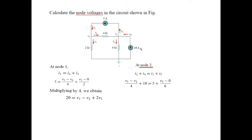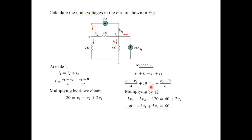At node 2, I4 and I2 are entering, and I1 and I5 are leaving. So I2 plus I4 equals I1 plus I5. I2 is (V1 minus V2) divided by 4. I4 is 10 amperes, I1 is 5 amperes. I5 is going from V2 to 0 so V2 divided by 6. The LCM here is 12, so we multiply by 12 and get simplified Equation 2.